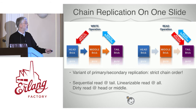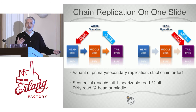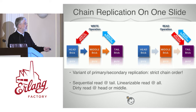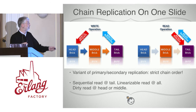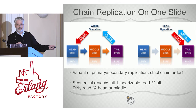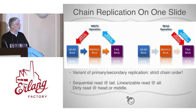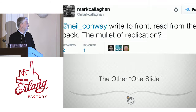For reads: if you want sequential consistency, you read from the tail. If you want linearizable reads, you have to check all of them. Machi's case is a little easier because values are immutable. The main reason for a linearizable read is doing read repair — if you encounter a partial write where the head was written but a crash left the middle unwritten, you do read repair to fix things. For a dirty read, you can read from the middle or even the head. As Mark Callahan summarized: writes to the front, reads from the back — it's the mullet of replication.